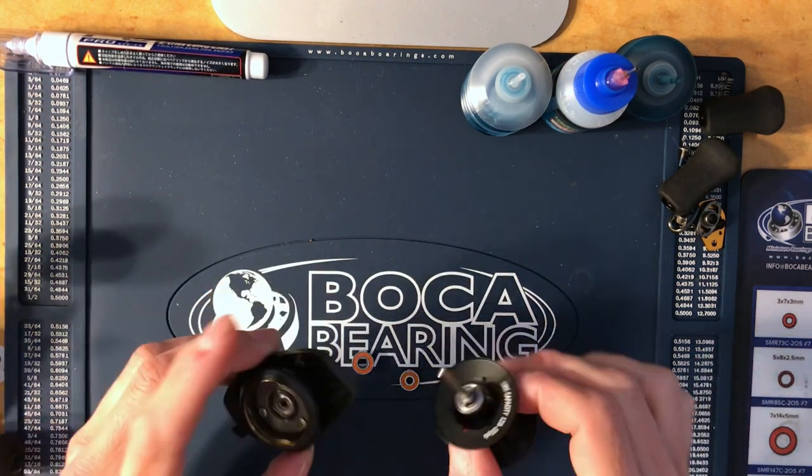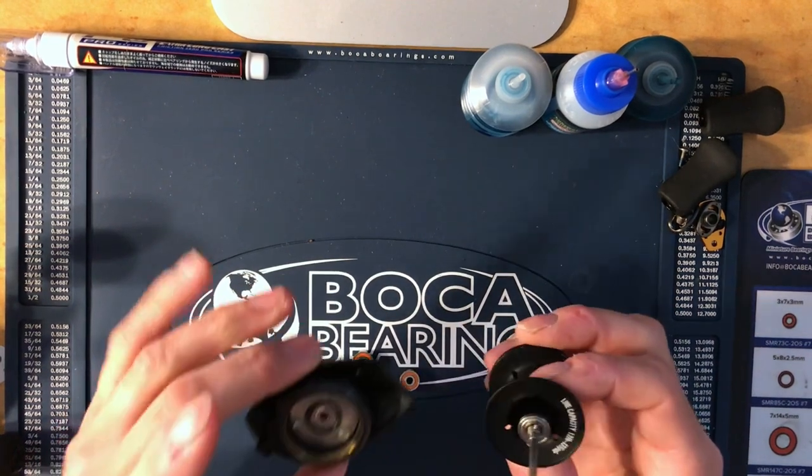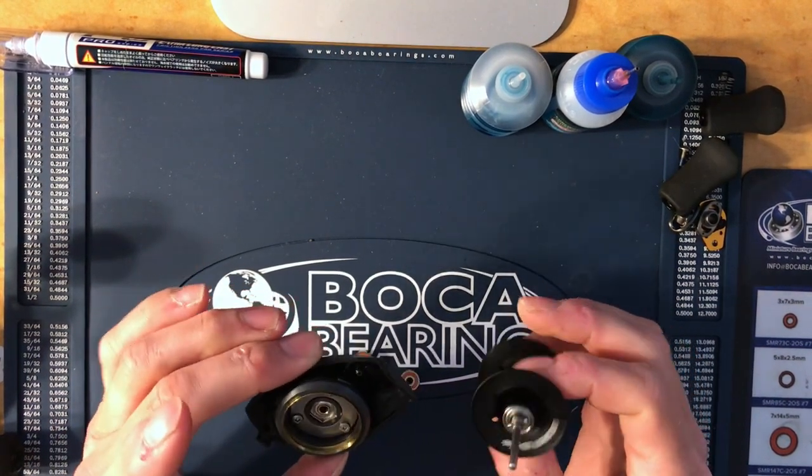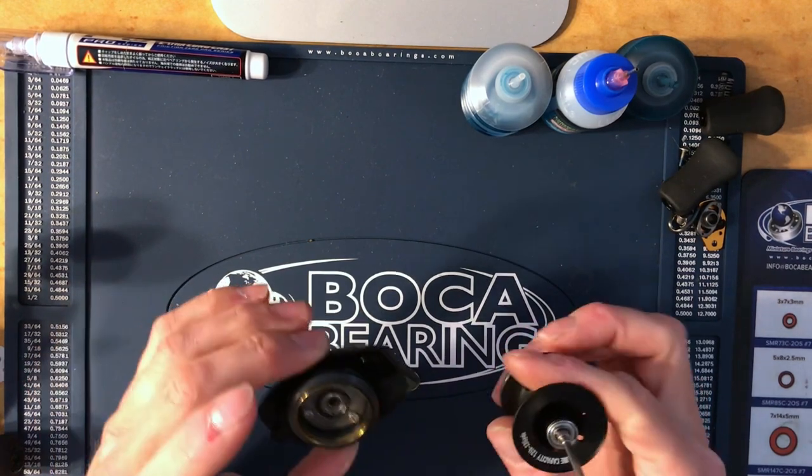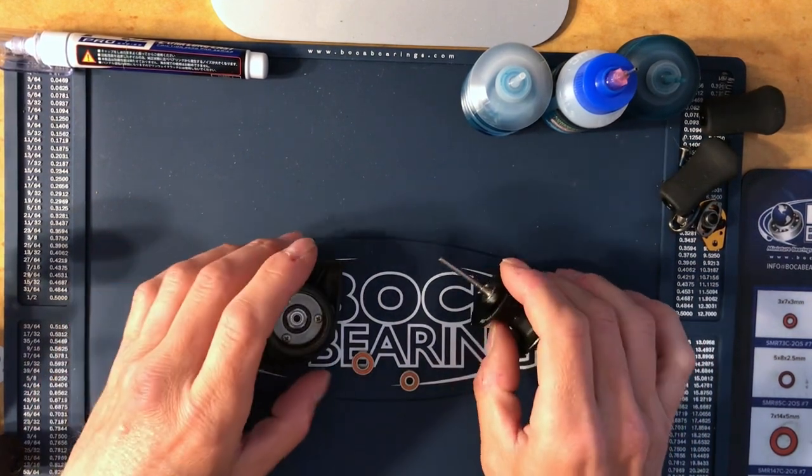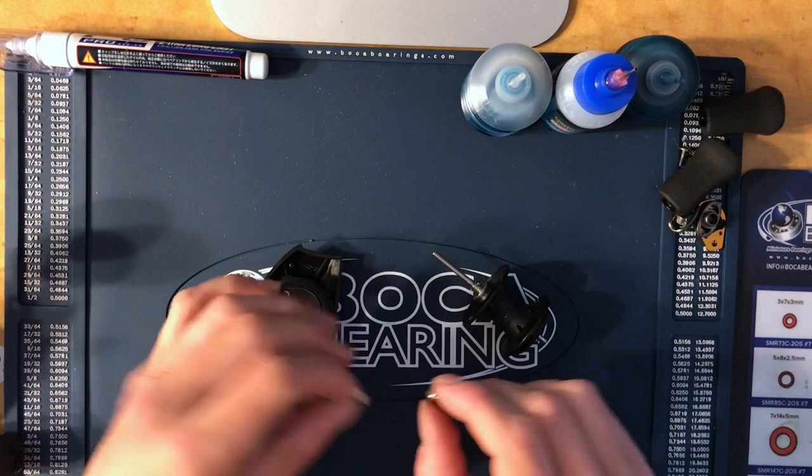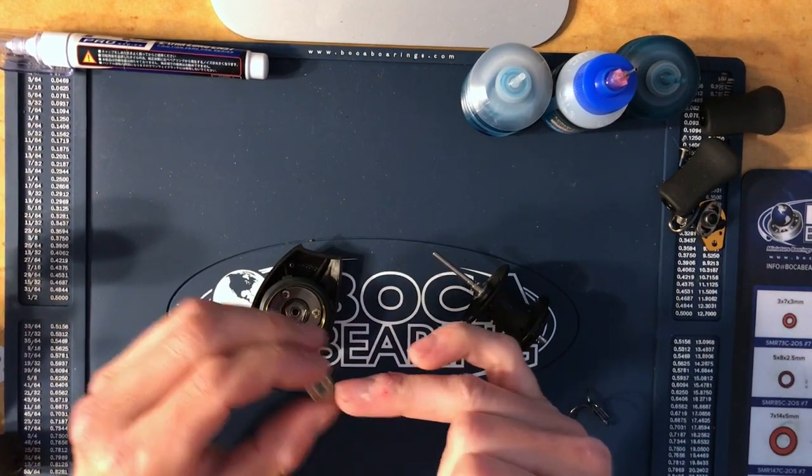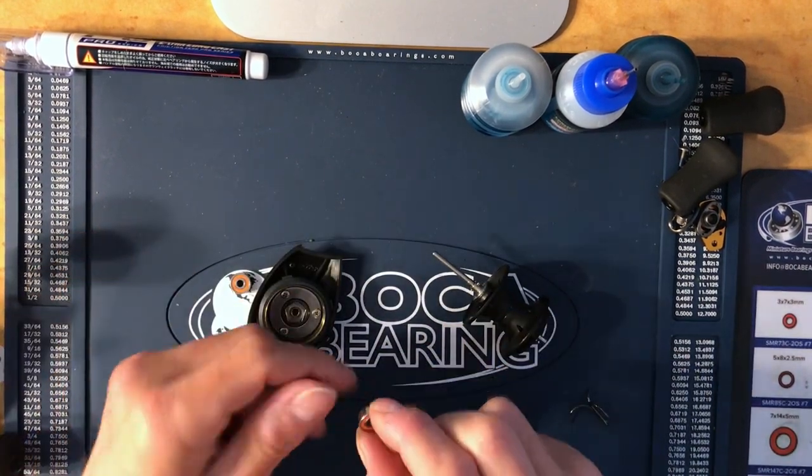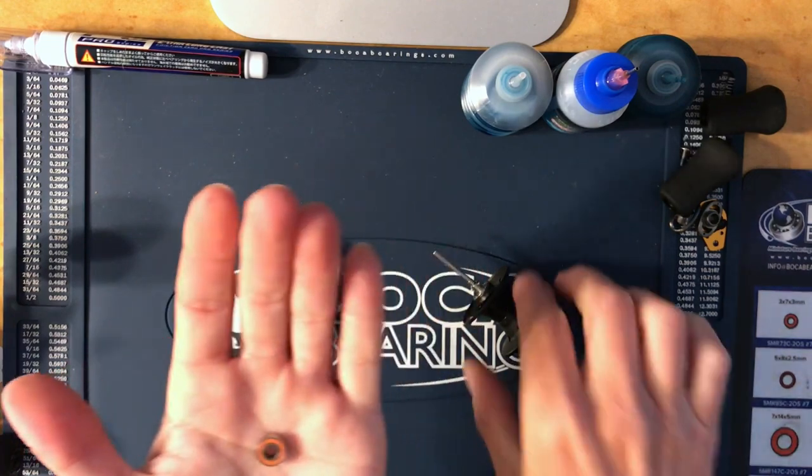I'm just going to show you how to do a bearing upgrade on the 13 Fishing reel. You're going to need the 310-4 for the side plate and a 511-4 for the spool.